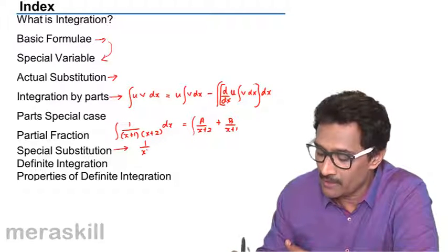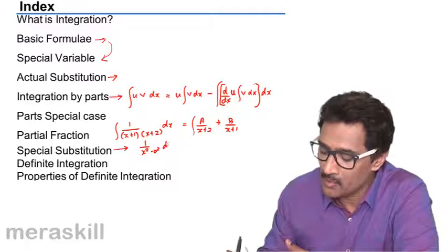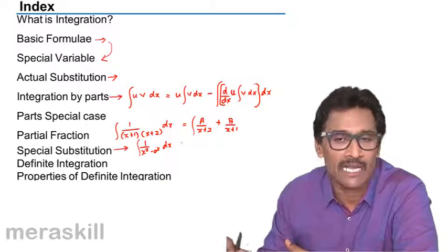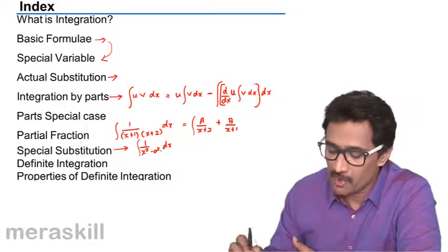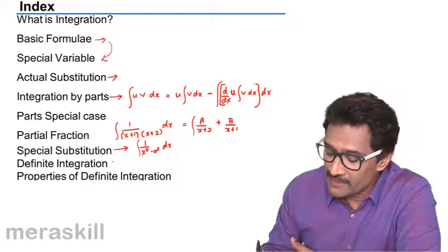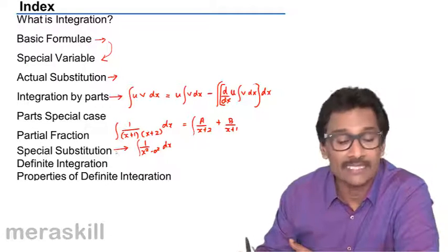Which are based on functions of say x square, 1 upon x square minus a square dx, and various varieties which we shall touch upon when we come over there. Then definite integration is going to be summing up all these things.